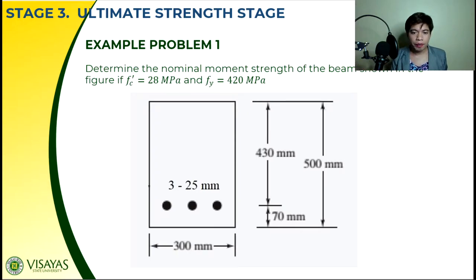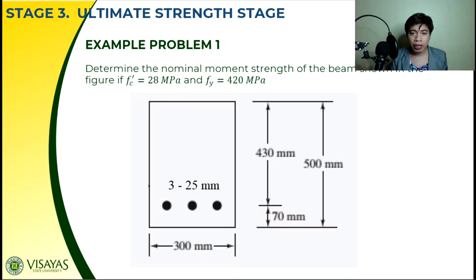So ito yung ating problem guys. Example problem number one: determine the nominal moment strength of the beam shown in the figure if F sub C prime is 28 MPa and F sub Y is 420 MPa. Yung ating beam dito guys is rectangular, so medyo madali lamang ito.